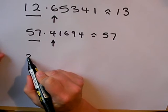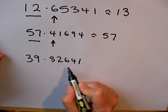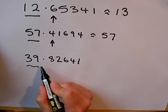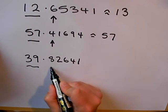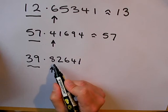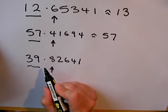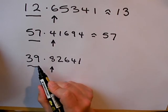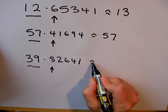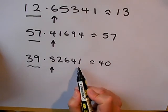Here's another example. Again, I want to round this number off to the nearest whole number. It's 39 point something. But what is this something? This something happens to be more than 5. And because it's more than 5, then this number here is closer to the next whole number. Not 39, it's closer to the next one. Of course, the next whole number after 39 is 40. So, 39.82641, rounded off to the nearest whole, is 40.